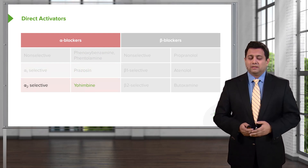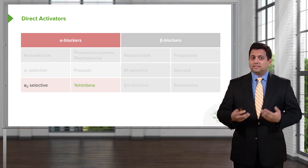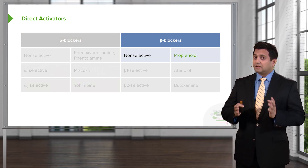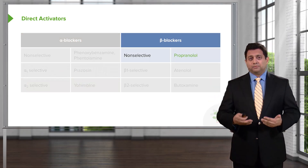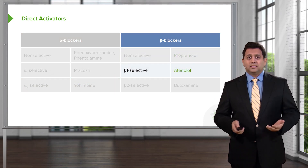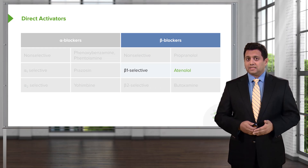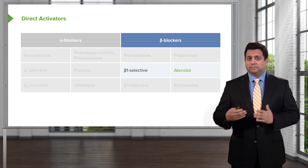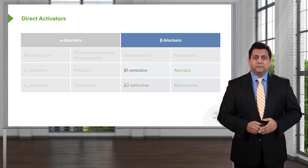I've never used yohimbine in clinical practice, but I always remember it because it's the one we had to memorize for exams. Now for beta blockers: the non-selective prototypical beta blocker is propranolol. The beta-1 selective example we always use is atenolol, which is an older beta blocker replaced by newer ones, but it's the prototypical one to remember.